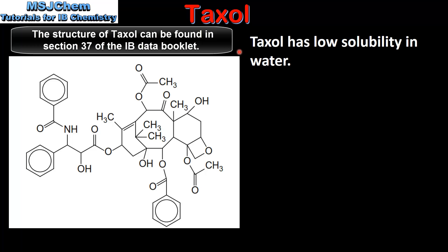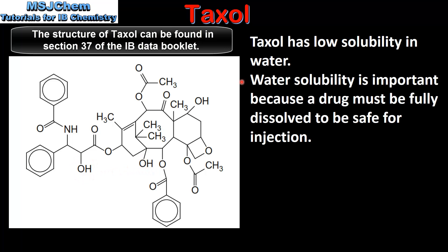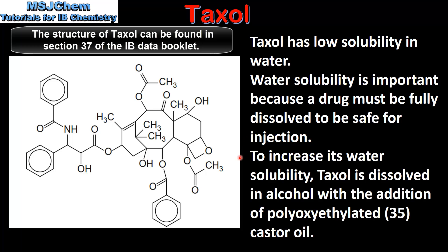Taxol has low solubility in water. From the structure we can see that it only has 3 hydroxyl groups, which means it has low solubility in water. Water solubility is important because a drug must be fully dissolved to be safe for injection. To increase its water solubility, Taxol is dissolved in alcohol with the addition of polyoxyethylated castor oil.